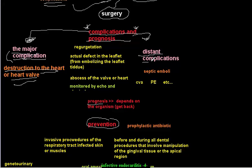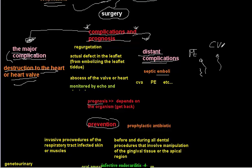The second group of complications is distant complications due to embolization of the vegetation. Embolization can go to the lung causing pulmonary embolism, to the brain causing CVA or seizures, or to the spleen causing splenomegaly. These septic or sterile emboli can cause complications like CVA and pulmonary embolism.